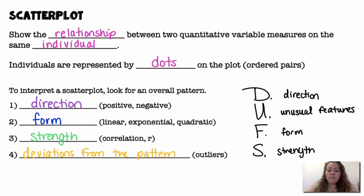Alright, and we have an acronym DUFS, D-U-F-S, for Direction, Unusual Features, Form, and Strength. So, if you're asked to interpret a scatter plot, those are the things you want to comment on.